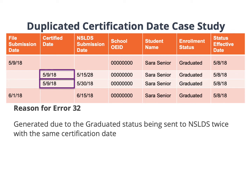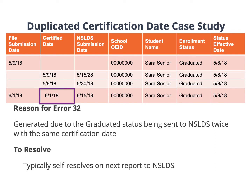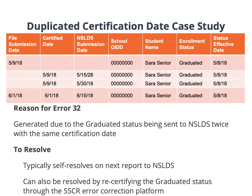The error in this scenario is typically self-resolving on the next report to NSLDS, as long as there was a new enrollment file processed. You can also recertify the record through the SSCR error report by submitting the record as is. This will assign it a new certification date, which should resolve the error.